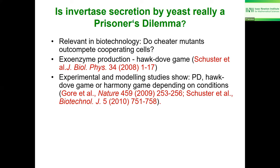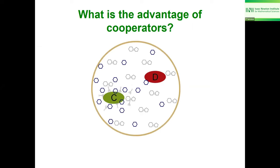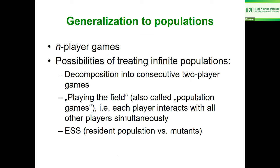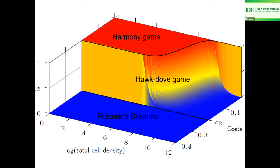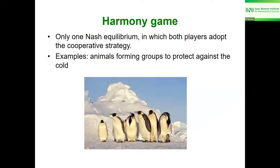In a middle parameter range it can be a hawk-dove game, and if secretion is very cheap it becomes a harmony game, where everyone cooperates. To explain the advantage of cooperators: if the environment is not well-mixed, cooperators locally experience a higher glucose concentration. At the Nash equilibrium these two effects compensate — locally higher glucose but cost of producing invertase for cooperators, and the reverse for defectors. We modeled this and fit the experimental data of Gore and Travisano.